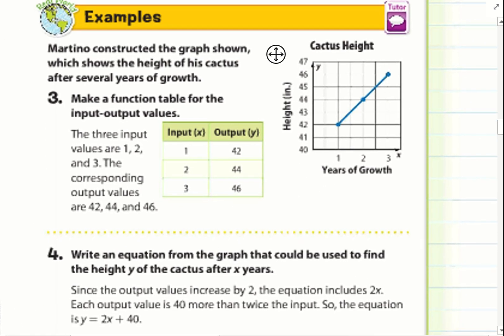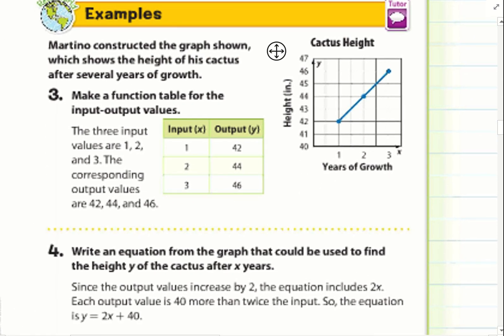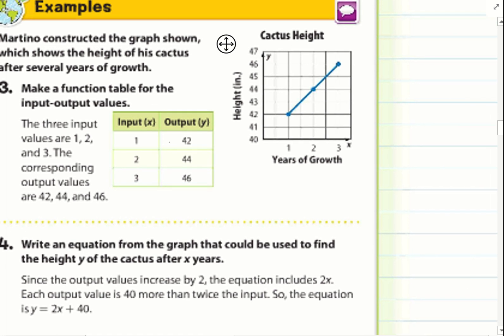Let's look at example 3. Martino constructed the graph shown, which shows the height of his cactus after several years of growth. Make a function table for the input, output values. The three input values are 1, 2, and 3. The corresponding output values are 42, 44, and 46. Based on that, he made a table. So we have 1 and 42, 2, 44, 3, 46. So my x-axis, 1 equals 1, y equals 42. 2 is at 44, and 3 is at 46. So we have the graphs shown here.